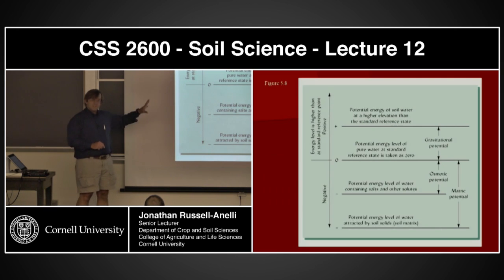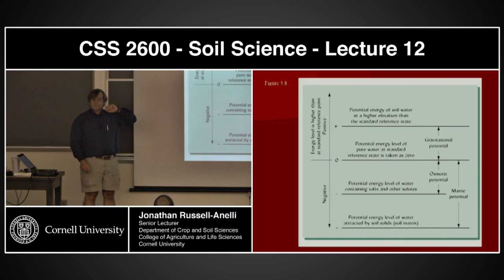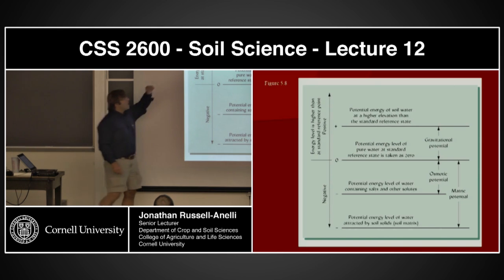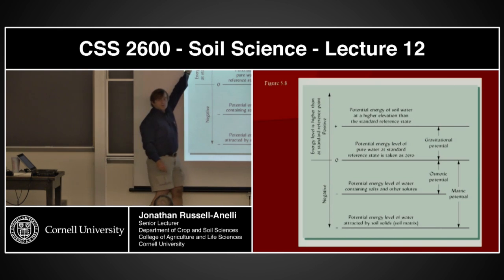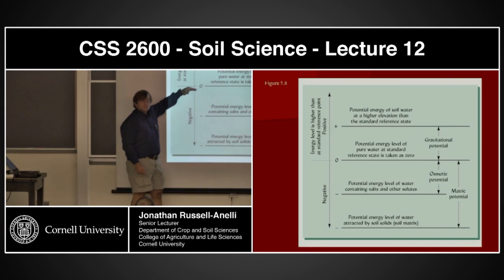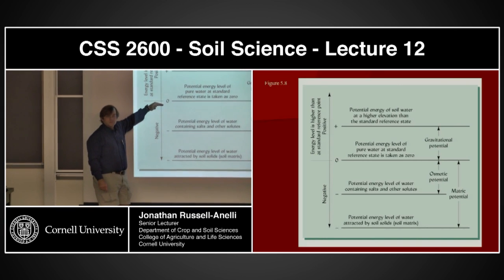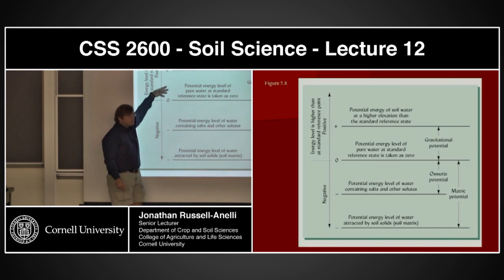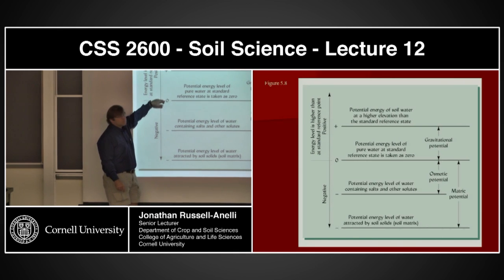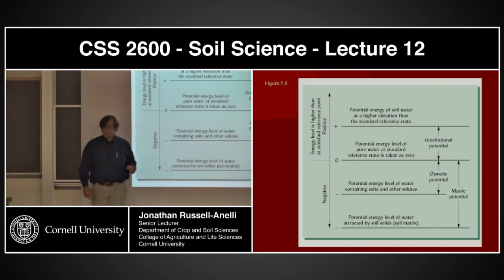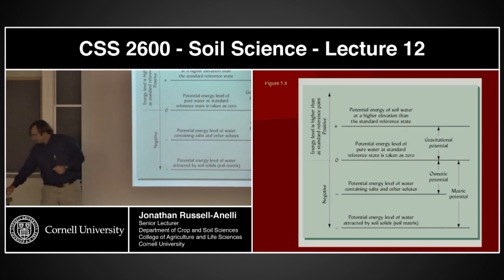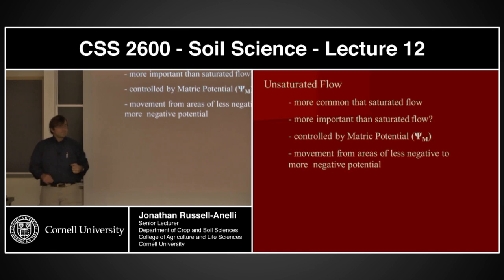Does this table graphic make more sense now? High flow towards your reference point, gravitational pull pulling this towards that reference point.